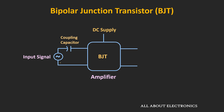The capacitor blocks the DC signal because for DC it acts as an open circuit. The reactance of the capacitor is given as 1 divided by 2πfc. For DC voltage, frequency f is equal to 0, meaning the reactance will be infinite and it acts as an open circuit. At the same time, this capacitor allows the AC signal to pass through it. If the value of the capacitor is selected properly, then at the operating frequency the reactance will be minimum, and for simplicity we can assume it acts as a short circuit for the AC signal.